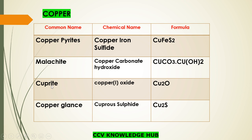Cuprite — chemical name is copper(I) oxide, formula is Cu₂O. The next one is copper glance — chemical name is cuprous sulfide, formula is Cu₂S.